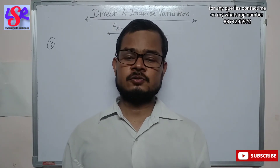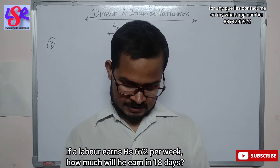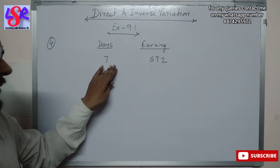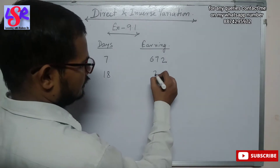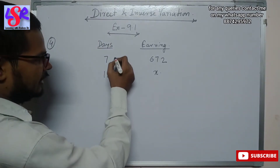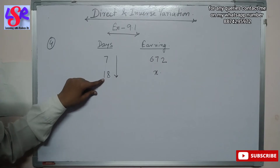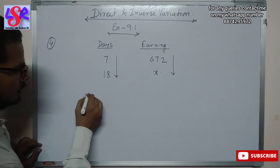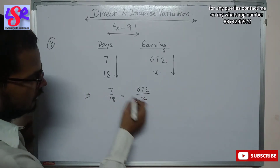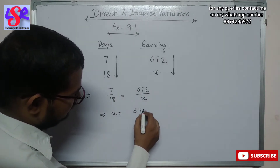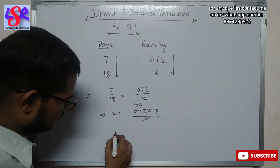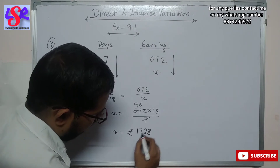Now question number 4: a labor earns rupees 672 per week — how much will he earn in 18 days? We have days and earnings. Earnings for 7 days is 672 rupees; earnings for 18 days is to be found. Since more days worked means more earnings, this is direct variation. We write: 7 upon 18 equals 672 upon x. Cross multiplying: x equals 672 into 18 upon 7, which gives x equals rupees 1728 as the answer.